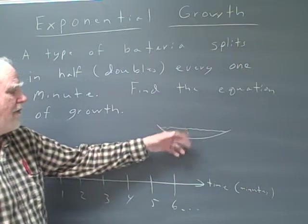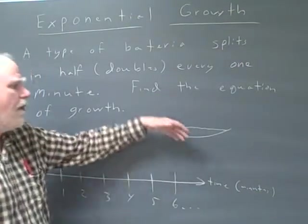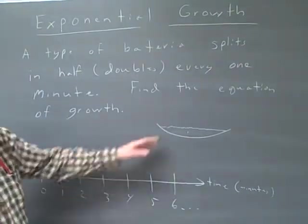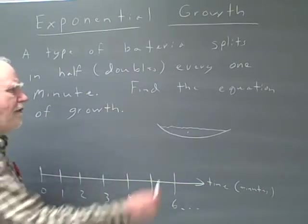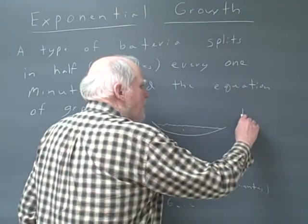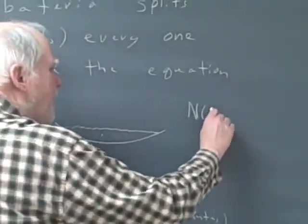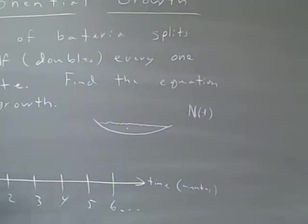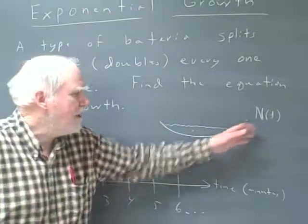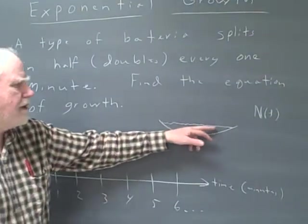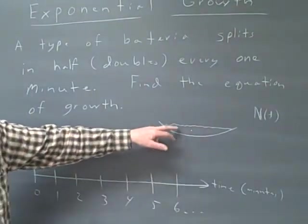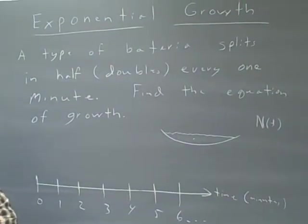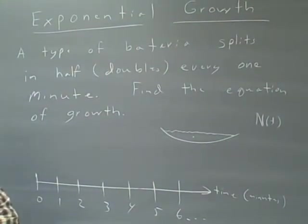So he's going to double every minute, and there's going to be four, and then eight, etc. What we're looking for is an equation of growth that is the number at any time t. So if somebody asks how many will I have in 20 minutes, or how long will it take to get a million of these things, then you can actually come up with that number. That's the model we're looking for.